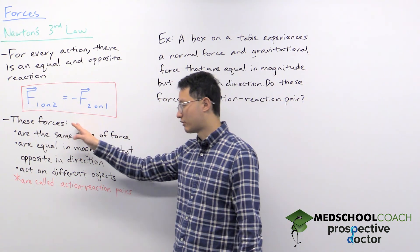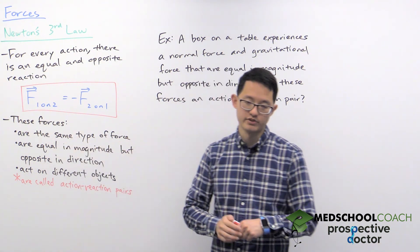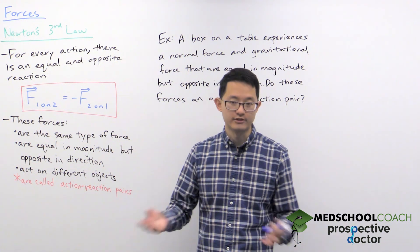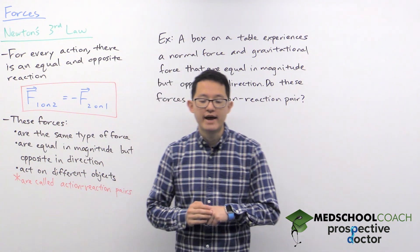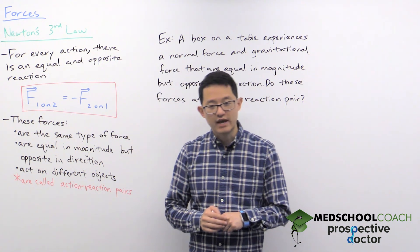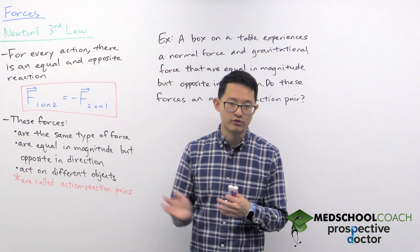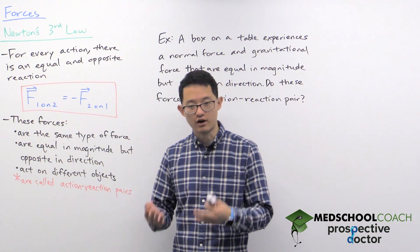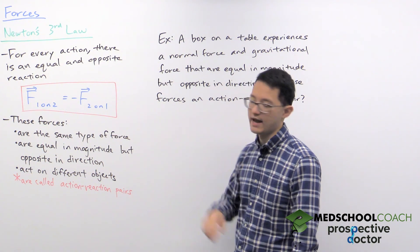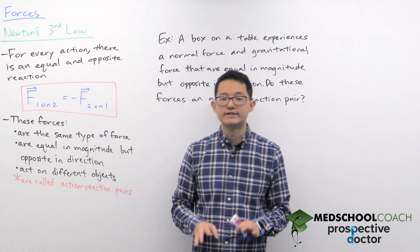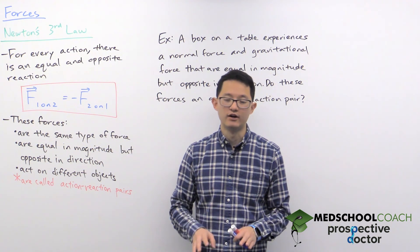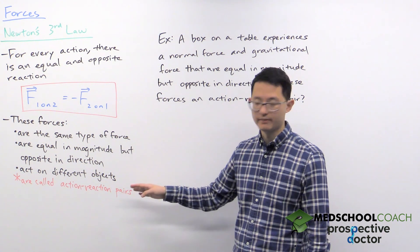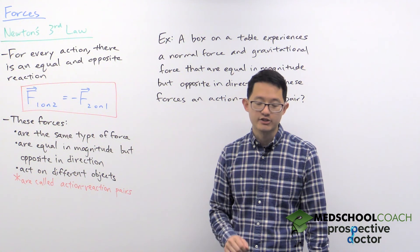Requirement number one: the forces have to be the same type of force, which means it can't be the gravitational force paired with the electrostatic force. Number two: the forces have to be equal in magnitude and opposite in direction. So if one force is 20 Newtons to the right, then the other force has to be 20 Newtons to the left — equal in magnitude, opposite in direction. Third requirement: the forces have to act on different objects. If you have forces that fulfill these three requirements, they form what we call an action-reaction pair.